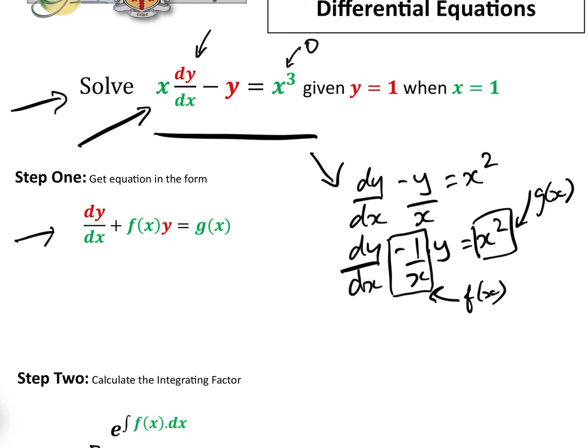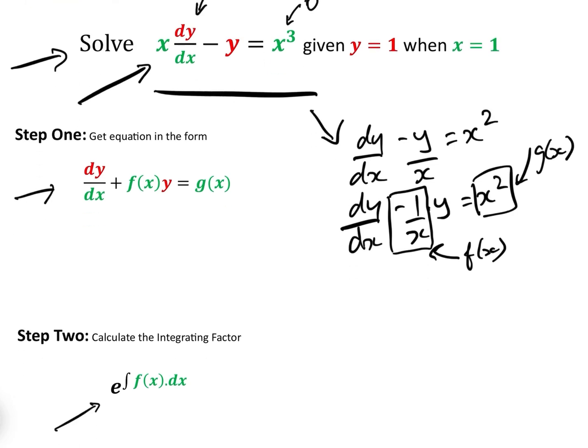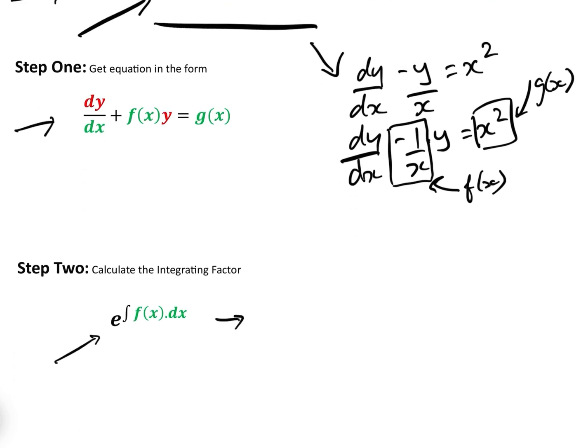Now, calculate the integrating factor, step two, is e to the integral of f of x. We know f of x is minus 1 over x, so that becomes e to the integral of minus 1 over x dx. Now the integral, which is e to the minus integral of 1 over x dx, and the integral of 1 over x dx is log x, which gives us e to the minus log x,